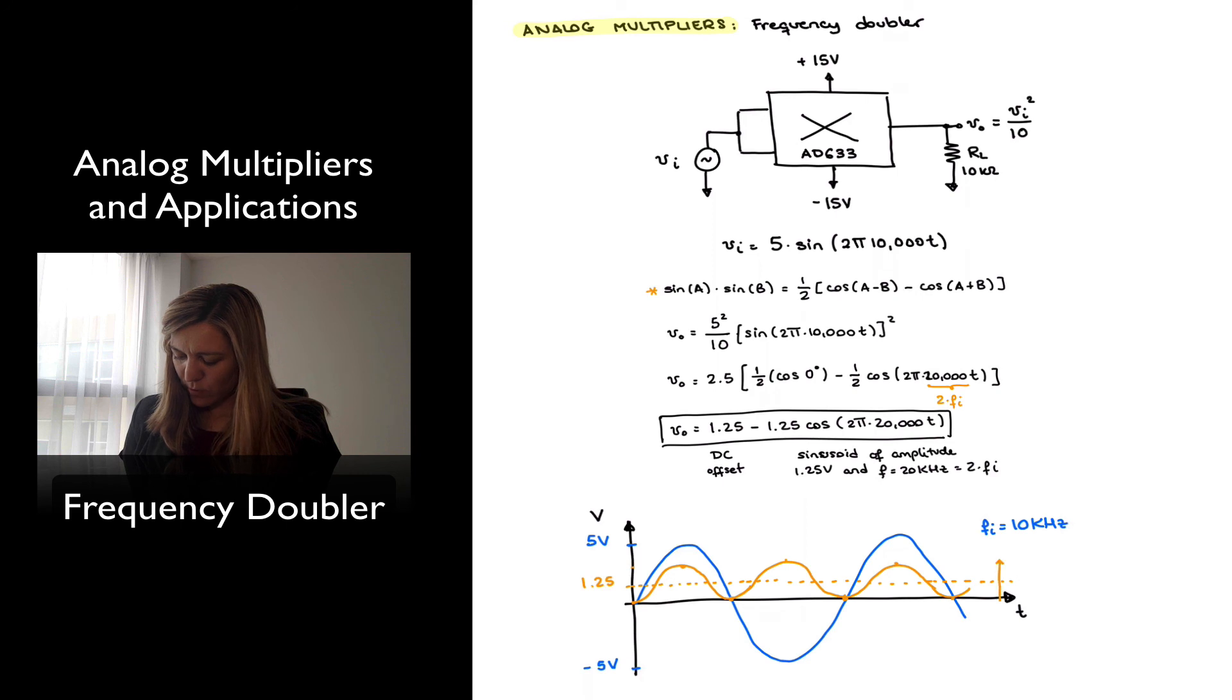So peak-to-peak is 2.5 volts, peak-to-peak is the offset of 1.25 and with appropriate phase shift with respect to the input.